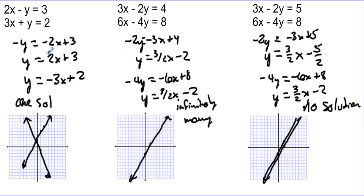So three things can happen when you have two lines: one solution, infinitely many solutions, or no solution. With no solution, the lines are parallel.